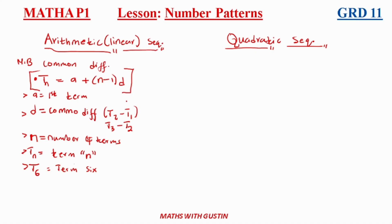This is the formula you need to know: 'a' is term number one, 'd' is the common difference, 'n' is the number of terms, and Tn is the nth term. Let's do an example — we are given the pattern: 5, 9, 13, and 17.